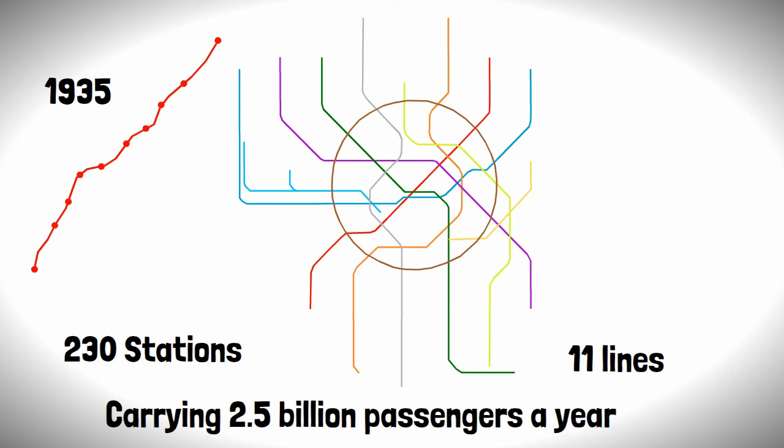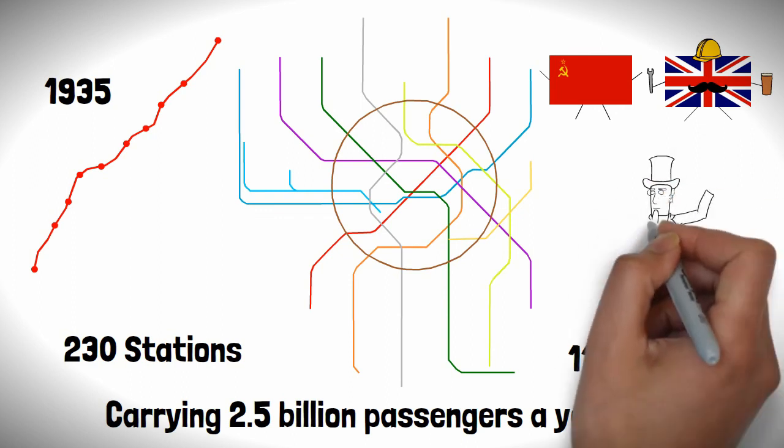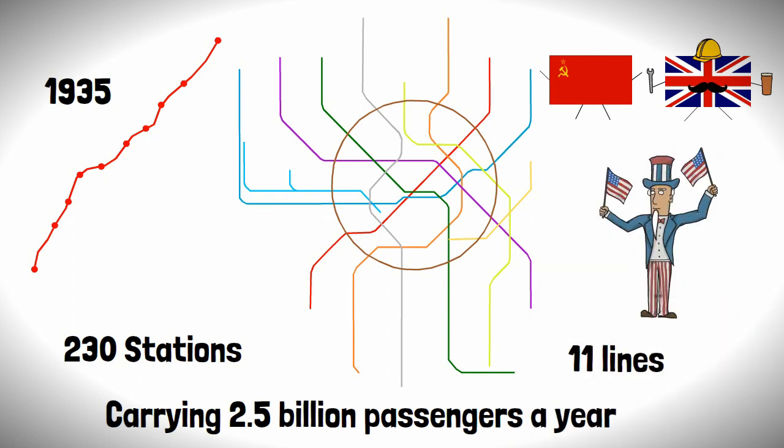It goes to show, with a communist government and a little help from the British, you can build a transport system which will make the capitalists green with envy.